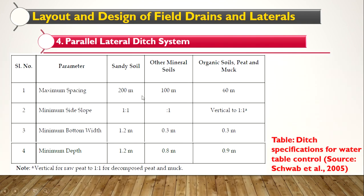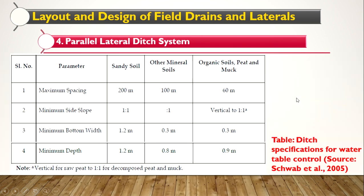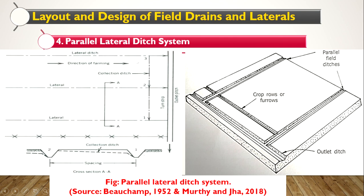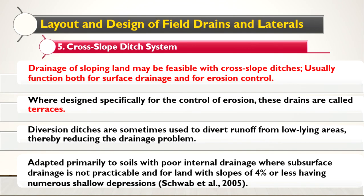In sandy soil, the maximum spacing between two ditches should be 200 meter. In other mineral soils, spacing should be only 100 meter. The minimum side slope should be 1:1. This refers to the slope of the trapezoidal ditch sides, which we have discussed many times — it is the slope of the side walls of the ditch.